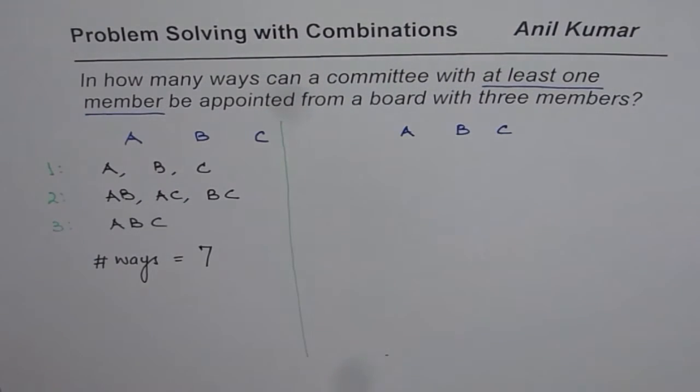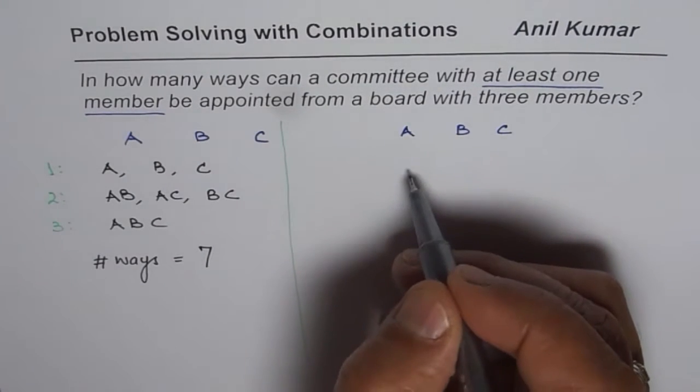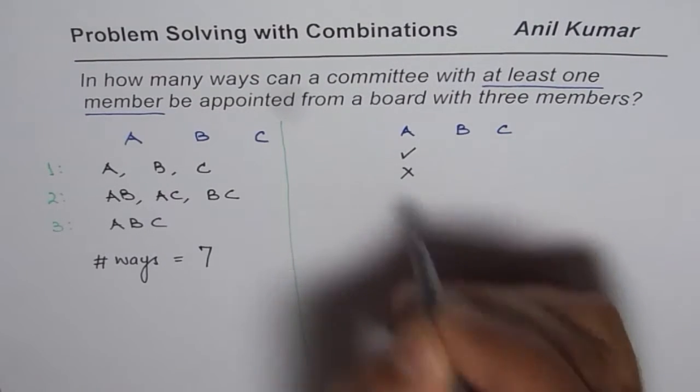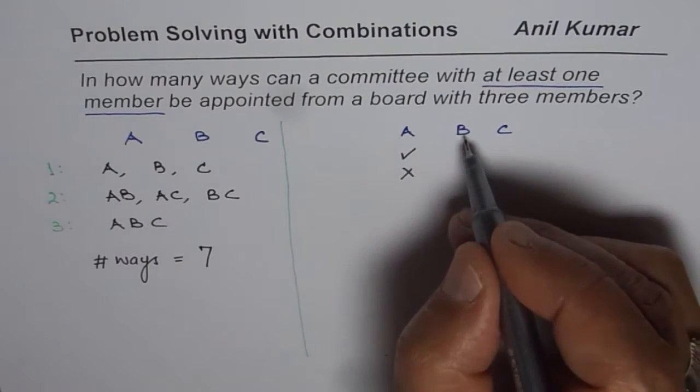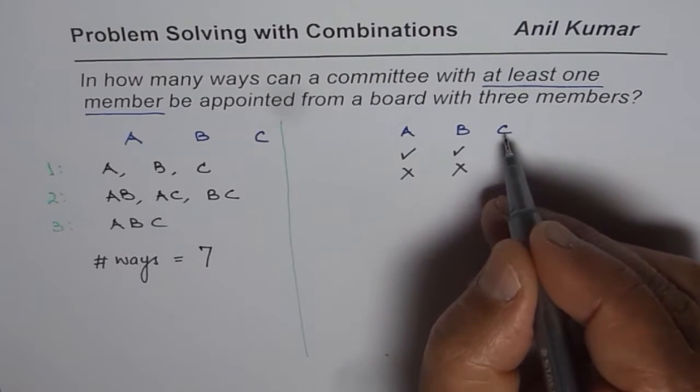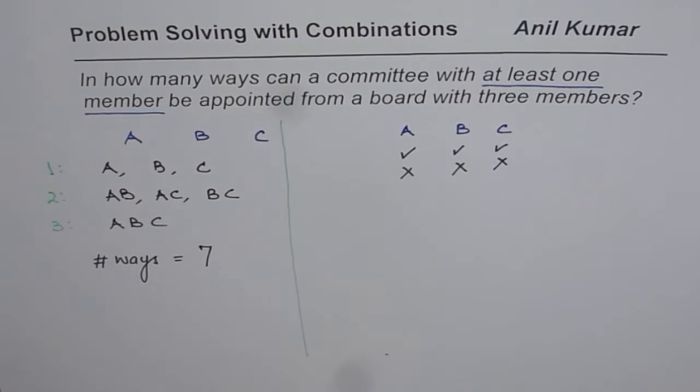Now what you can have in a committee is the option that either you select A or you do not select A. So we select A or we do not select A. Similarly, for member B, there are two options, either we select or we do not select. Similarly, for C, either we select or we do not select. Do you get an idea?